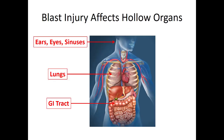When assessing patients who are closer to the initial blast wave, the organs you need to think about are the ears, eyes, and sinuses near the face and neck; the lungs, which are hollow organs; and the GI tract. The difficulty with primary injuries is they can be the most severe and deadly type, but they're also the hardest to see. We have no way to see the lungs or the GI tract, but these hollow organs, as a result of that big pressure wave, can really sustain some significant damage — and the ears, eyes, and sinuses as well.